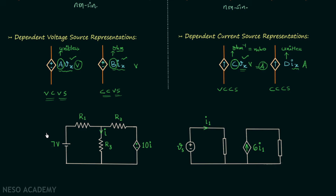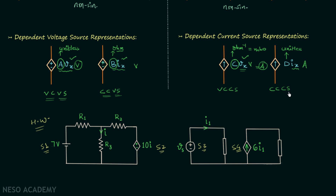After understanding dependent and independent sources along with their representations, here are two homework circuits. You need to identify whether source 1, source 2, source 3, and source 4 are dependent or independent, and also classify each as a dependent current source, dependent voltage source, voltage controlled voltage source, current controlled voltage source, voltage controlled current source, or current controlled current source.